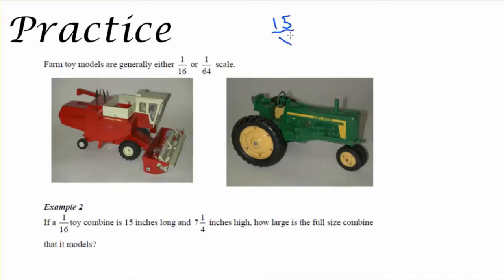So let's set up that the toy is 15 inches long over X, the length of the actual tractor, which we do not know. And that's going to be equal to 1/16th, 1 inch being equal to 16 inches on the actual tractor. So when I cross multiply, I get 1 times X, which is X, and then 15 times 16, which is 240 inches.